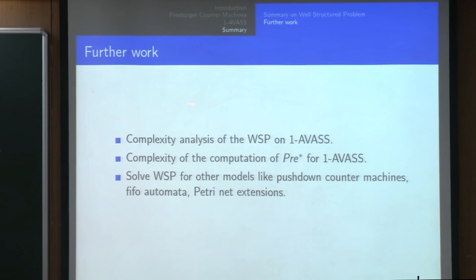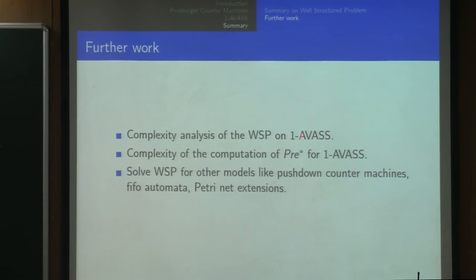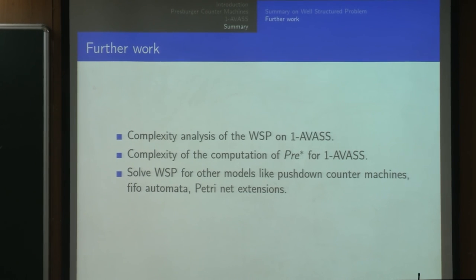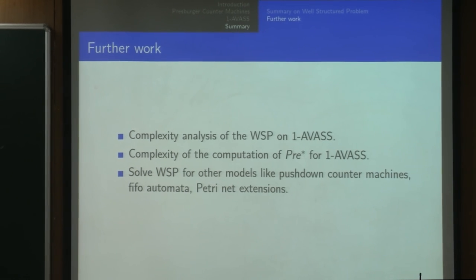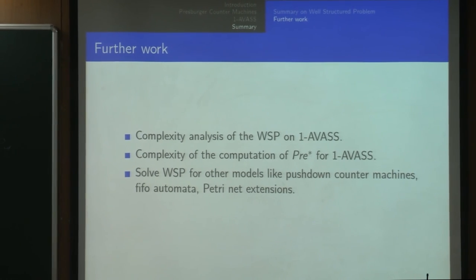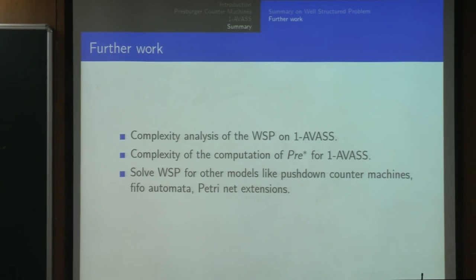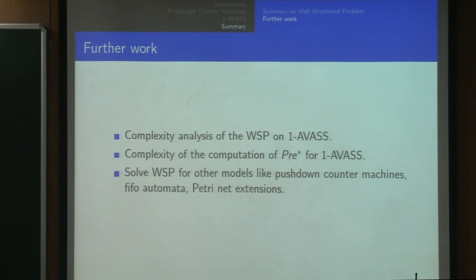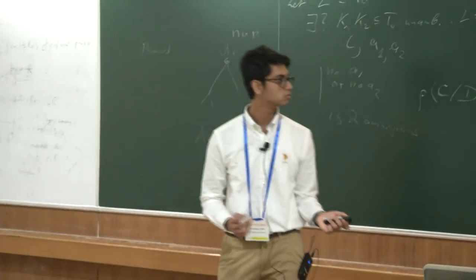Some further questions to be explored: the complexity analysis of the problem—we have a pre-star algorithm but getting tight complexity bounds is hard and we are still working on it. The other direction is extending the problem to other models: the well-structured problem for pushdown machines, FIFO automata, extensions of Petri nets, and so on. These are things we are working on right now.